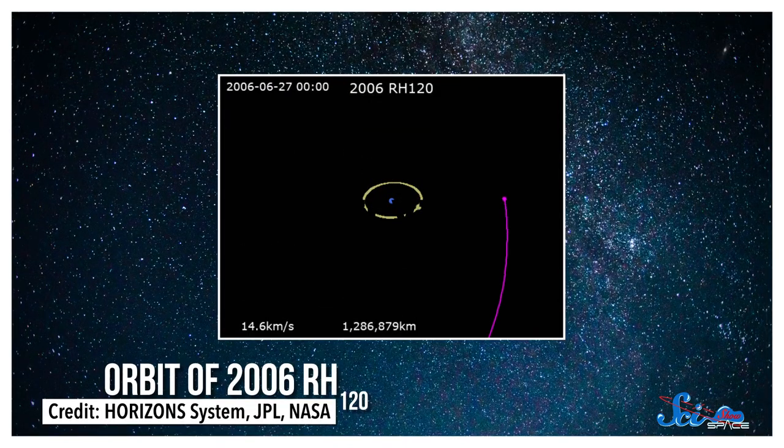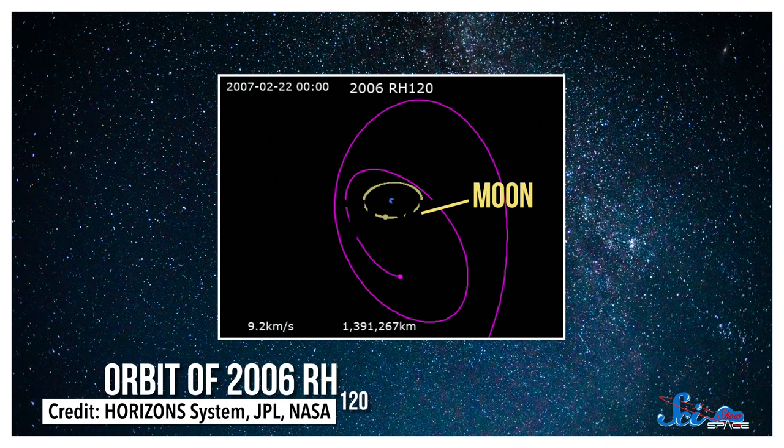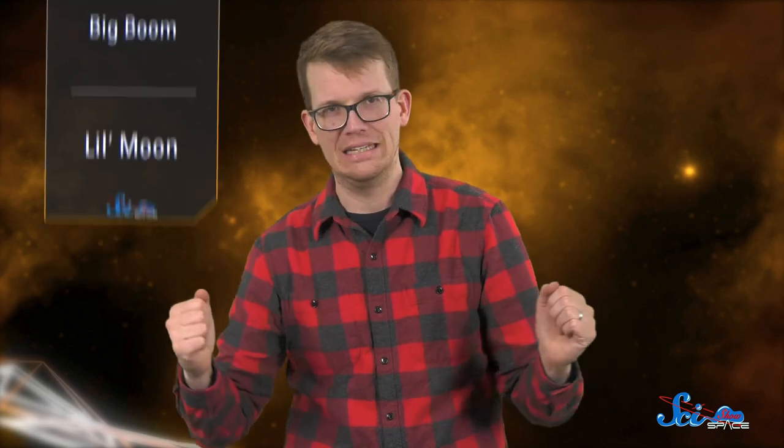Unfortunately, orbital dynamics makes it hard for mini-moons to stay around for very long. That's mostly because the moon — like, the main moon — really throws things off. It's big and near enough to keep new mini-moons in chaotic orbits that never settle. They either burn up in Earth's atmosphere or get ejected from the system. And our newest mini-moon is headed out. In April, it will leave us for more exciting places.